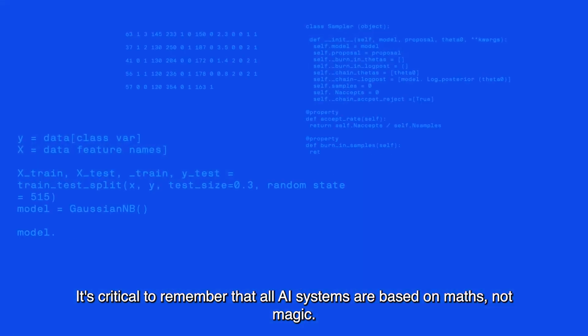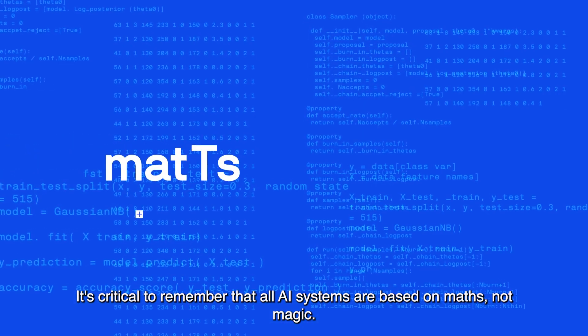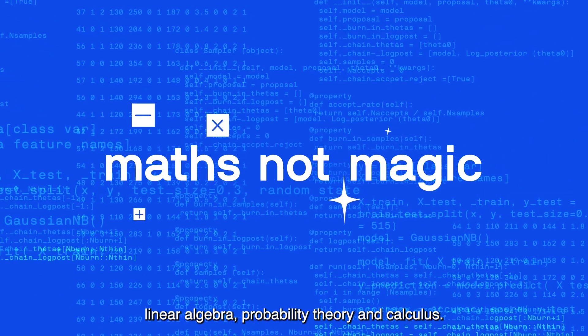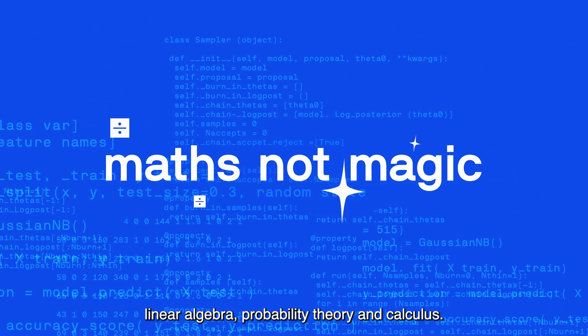It's critical to remember that all AI systems are based on maths, not magic. Machine learning is underpinned by statistics, linear algebra, probability theory and calculus.